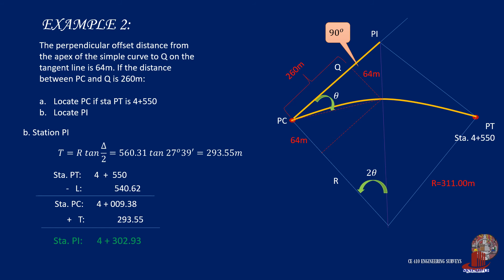Let's check if we can use the forward tangent. From station PT, subtract the forward tangent, which is equal to 293.55 meters. The outcome, which is supposed to be station PI, is 4 plus 256.45 meters, which has a great discrepancy from the true station PI — confirming that we must not use the forward tangent in stationing.